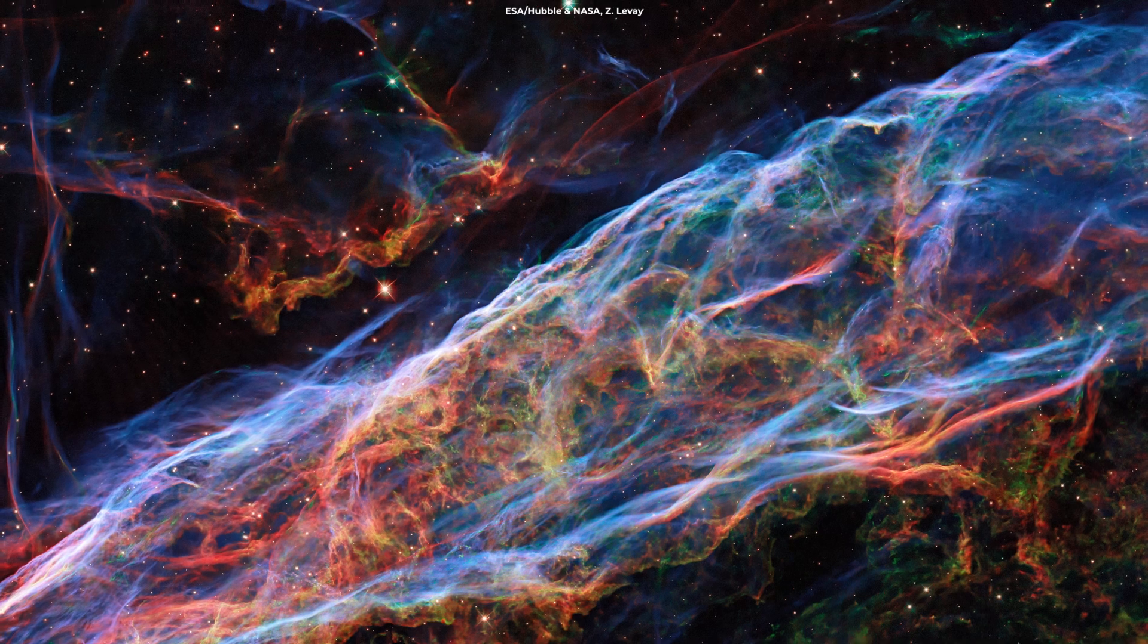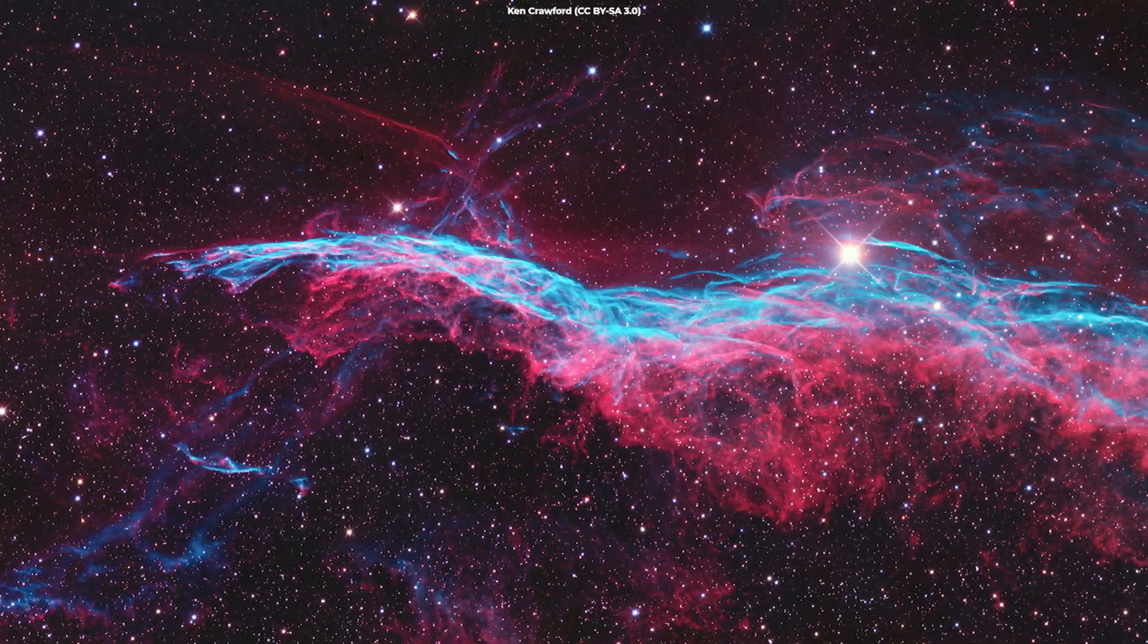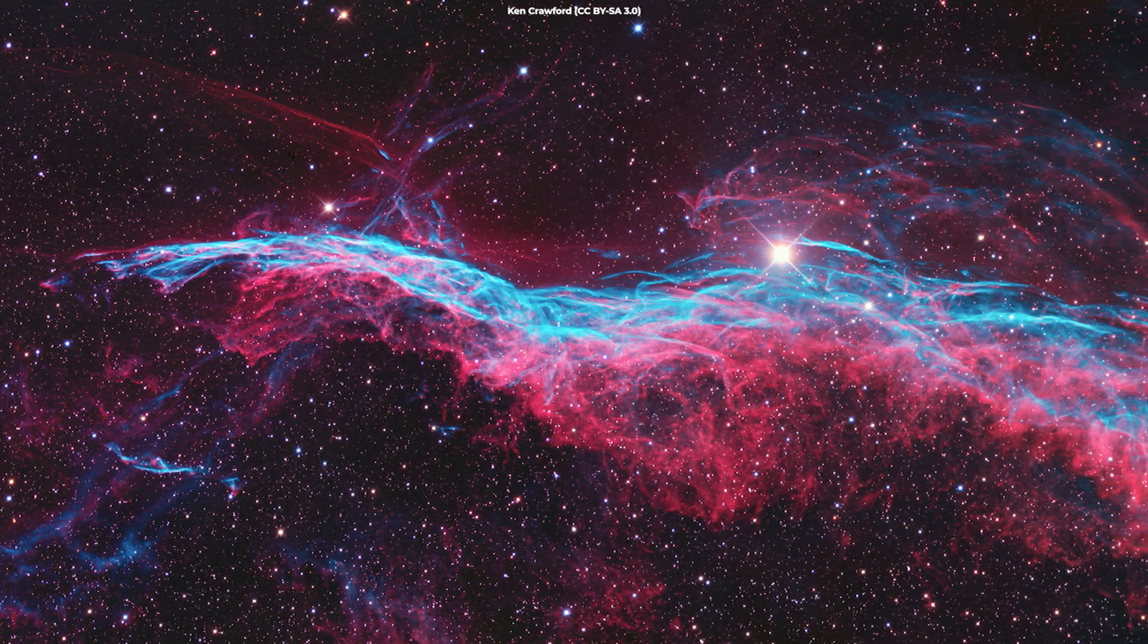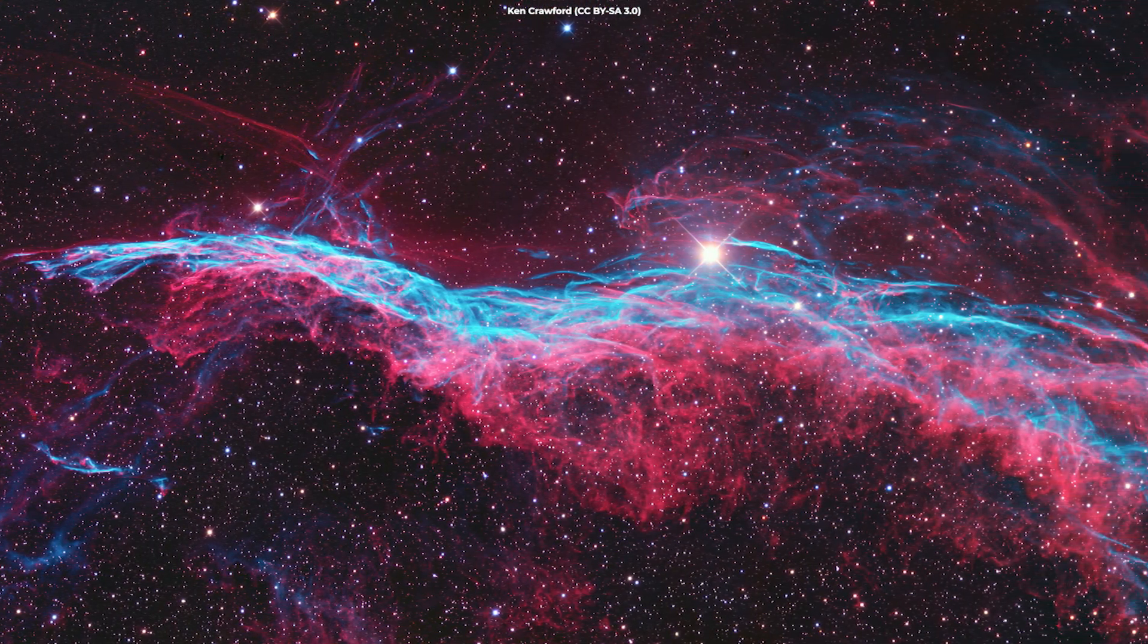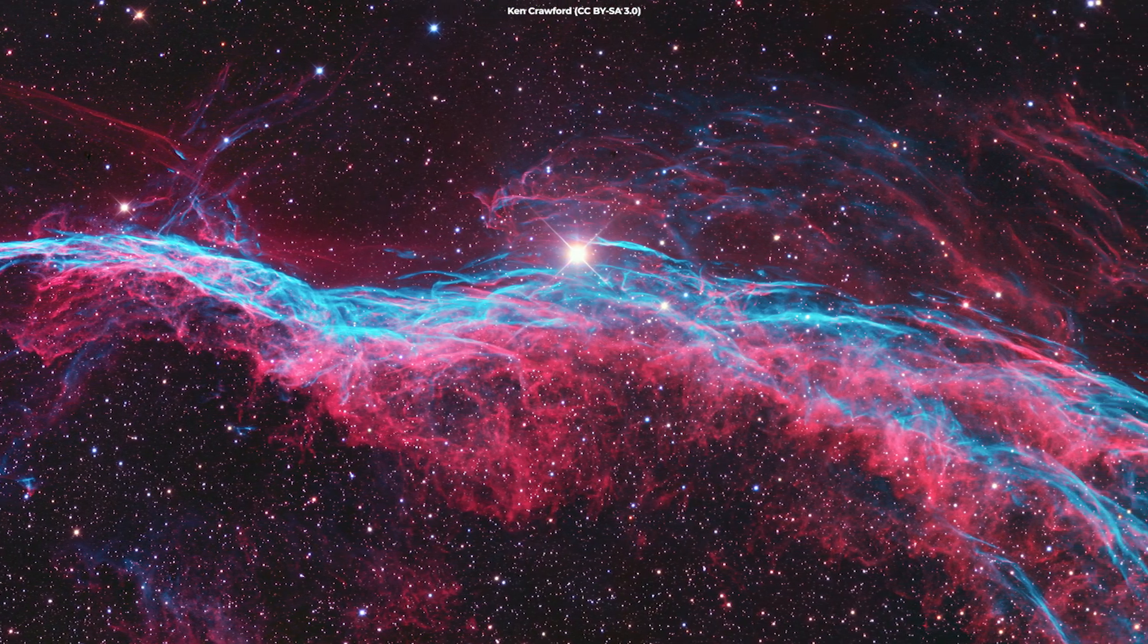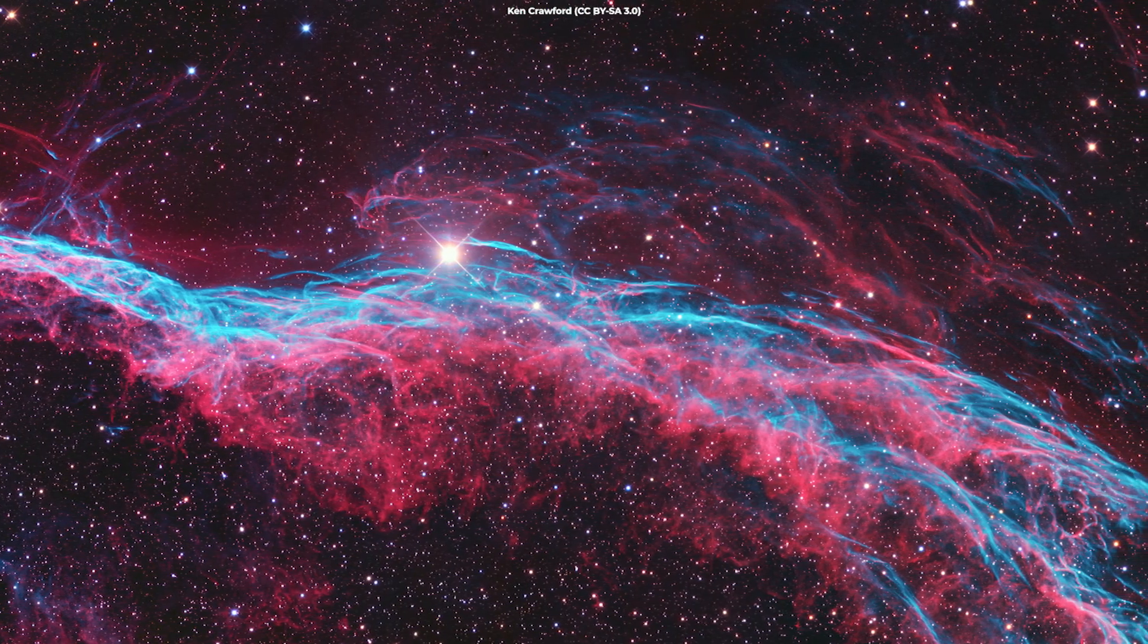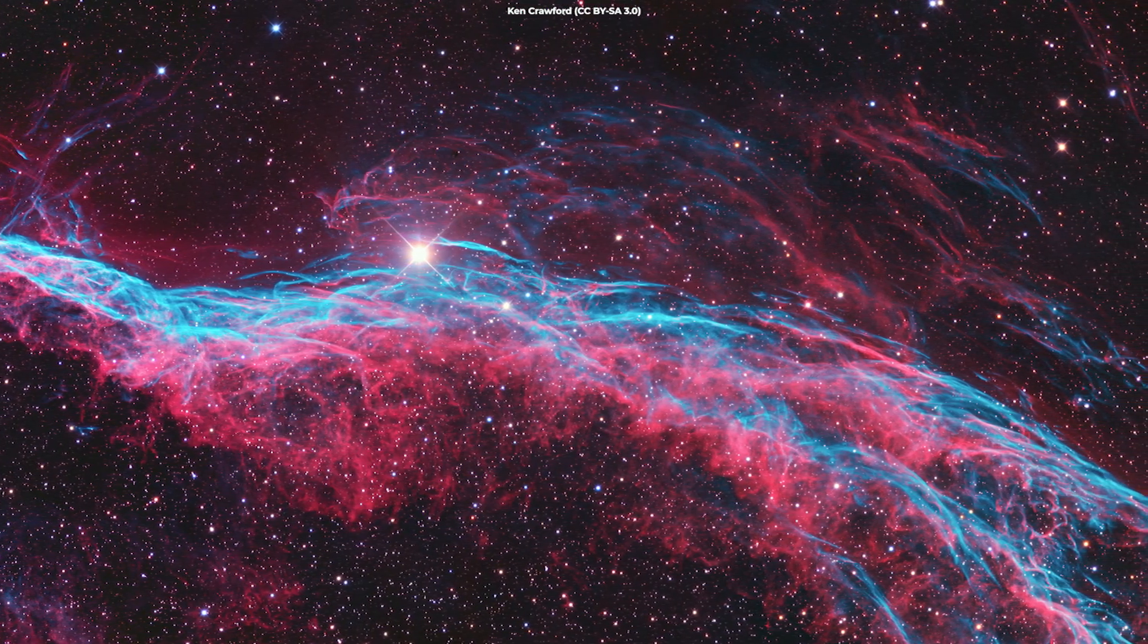Only a small portion of the nebula was captured in this image. The entire nebula is 110 light years across, covering six full moons on the sky as seen from Earth, and lies about 2,100 light years away in the constellation Cygnus the Swan.